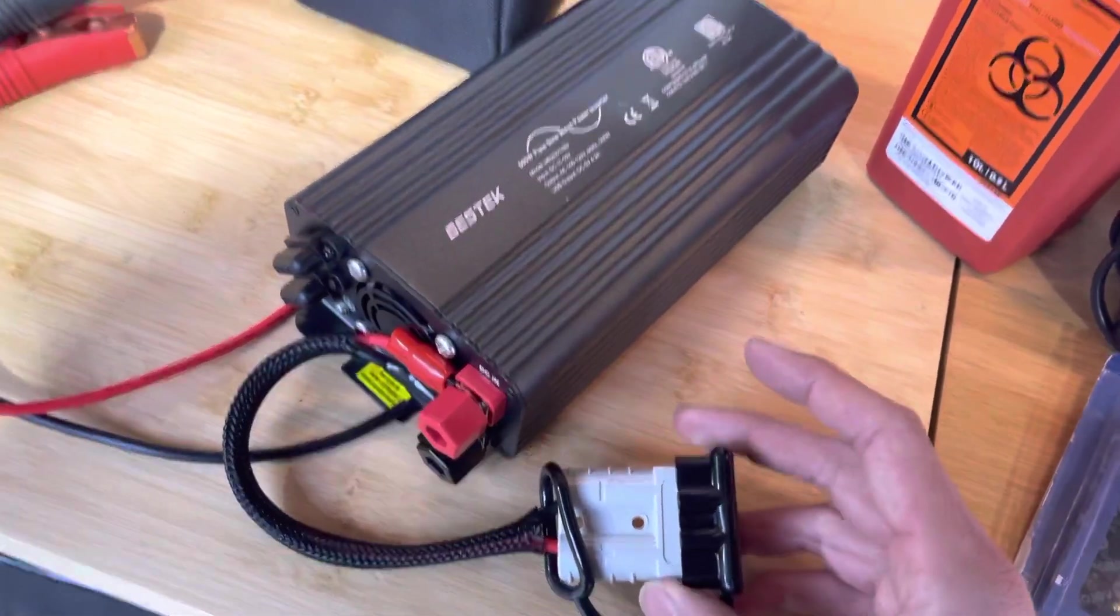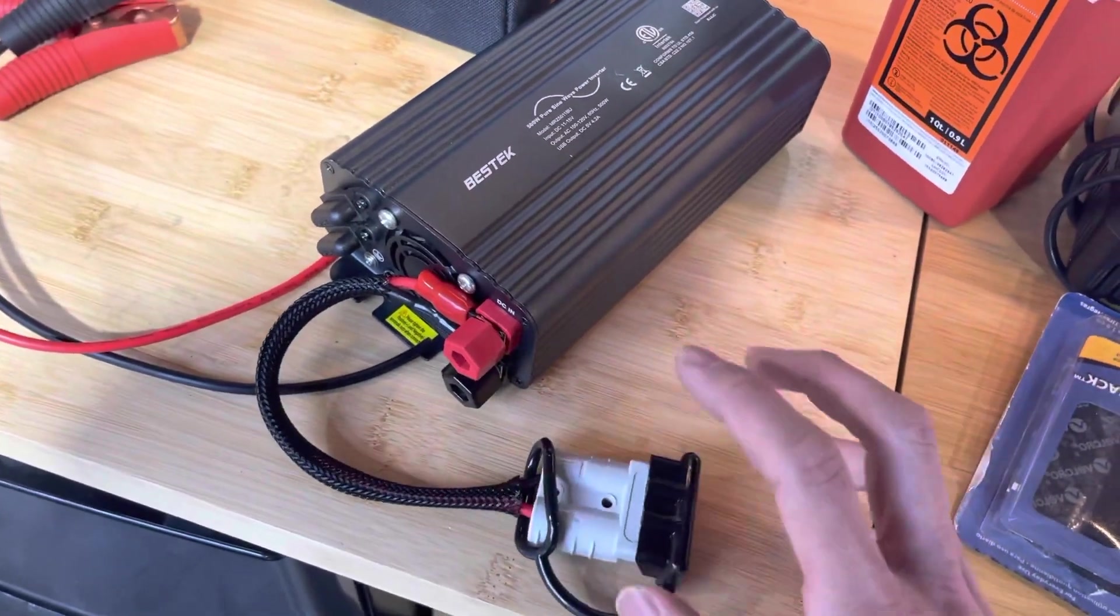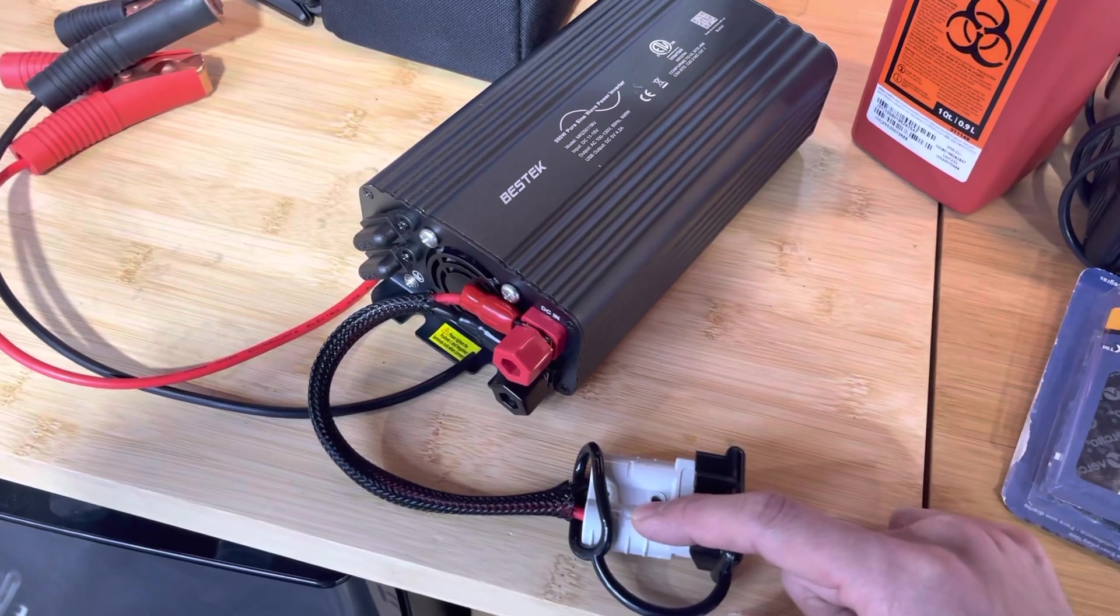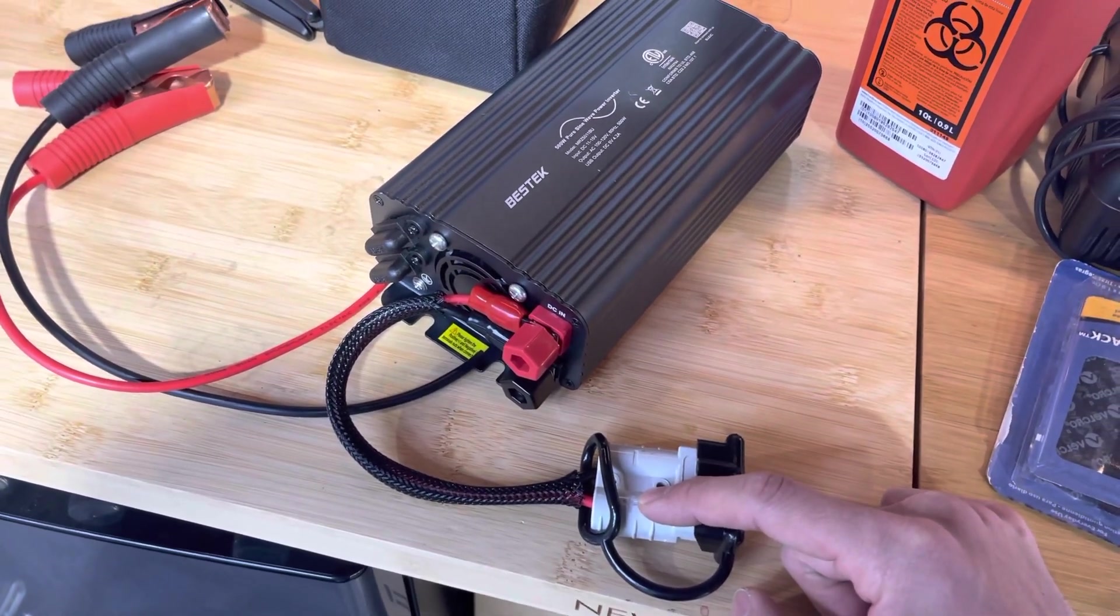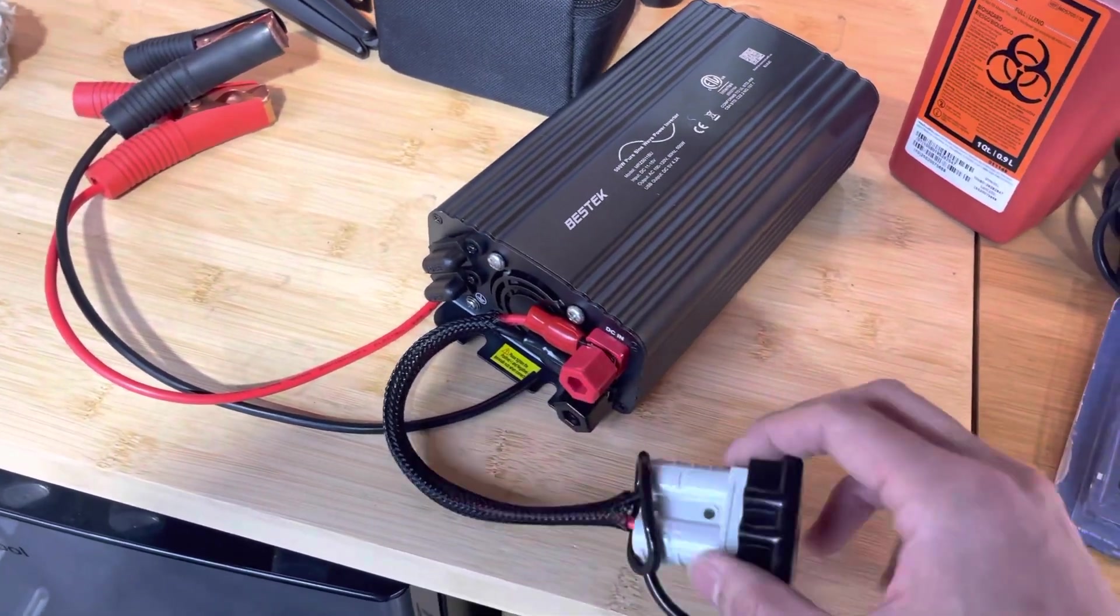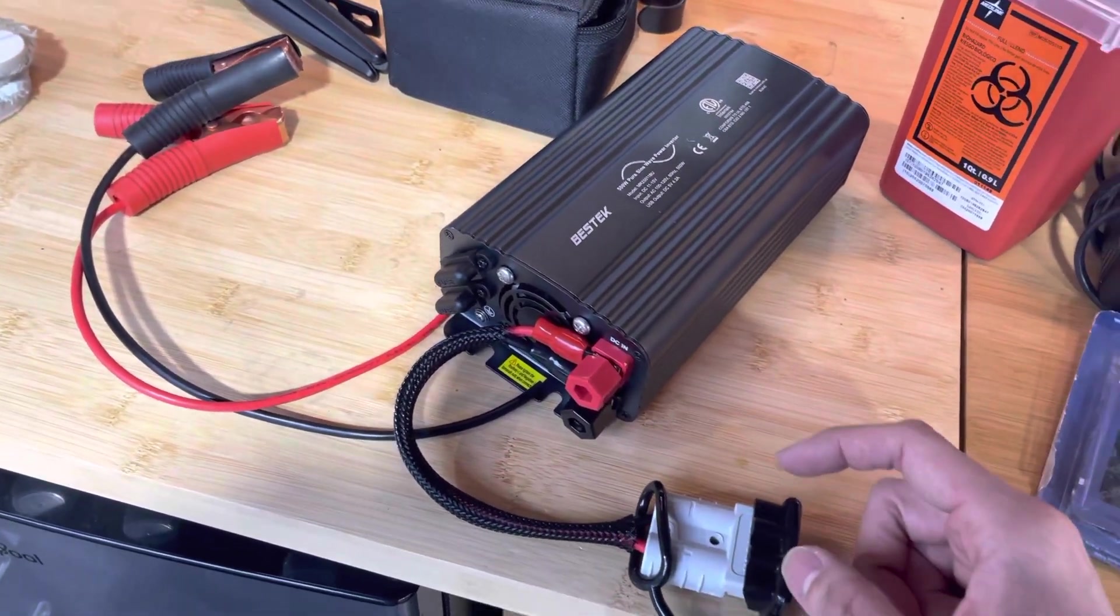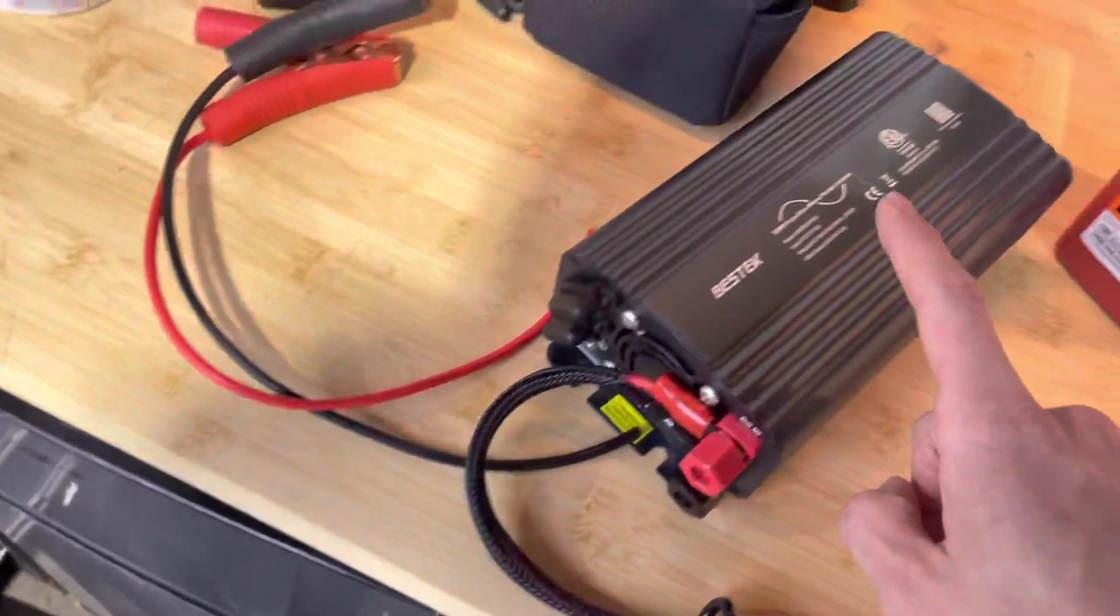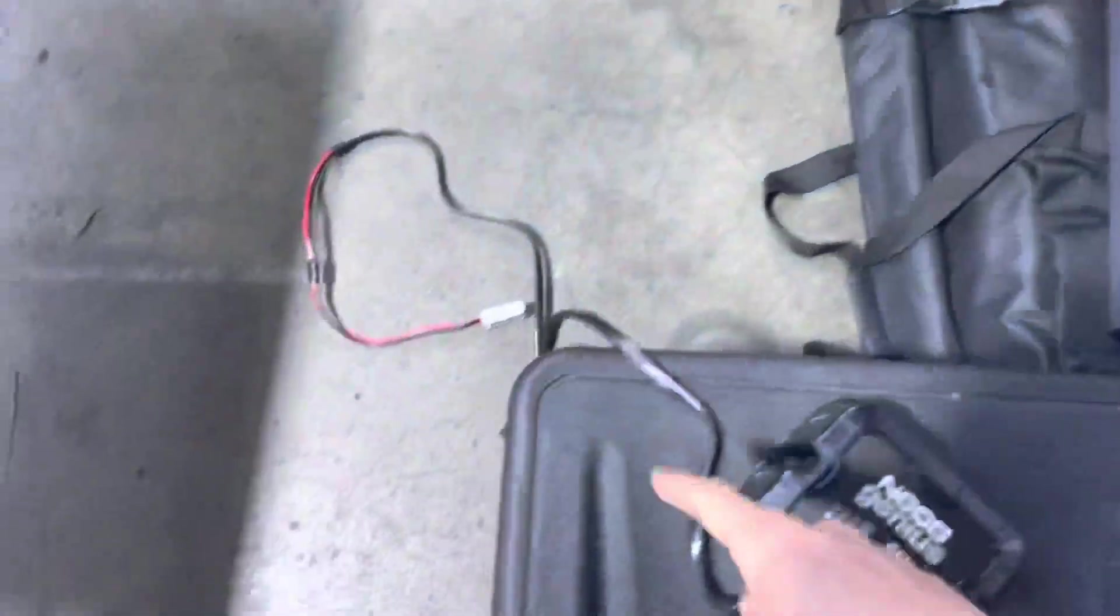I've got a smaller inverter with a quick connect. I can hook this up to my car under my back seat. I have a distribution block with a positive negative with a quick connect there, that's connected to my battery.